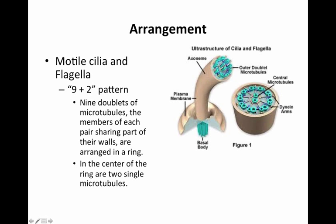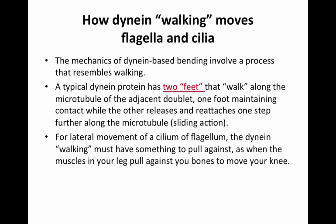There are nine doublets arranged around a central pair of two single microtubules — that's the nine-plus-two arrangement. These microtubules are important for movement.